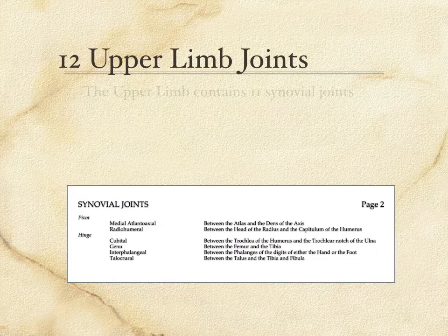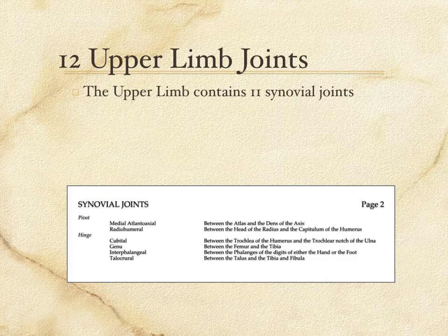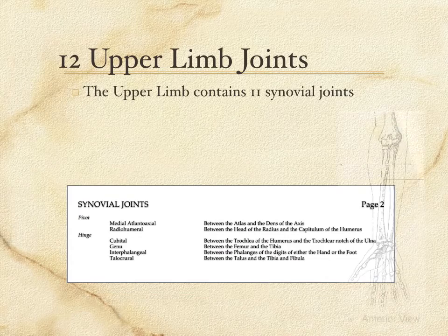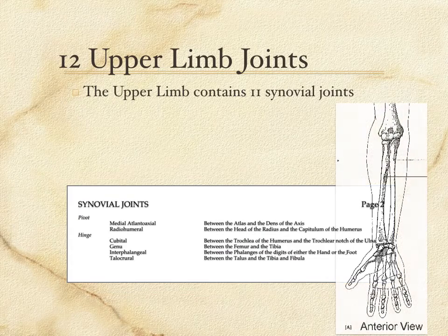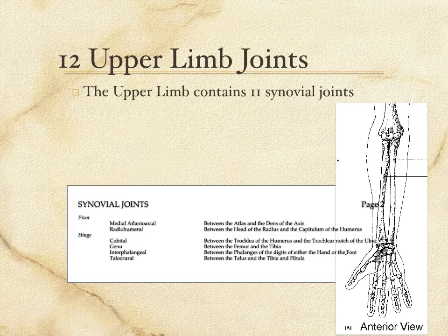Of the 12 upper limb joints, 11 are synovial, and at least one is found in each of the six categories of synovial joints.